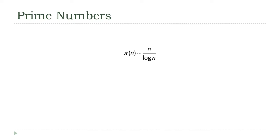We know quite a bit about prime numbers, but we definitely don't know everything. For example, we've got a pretty good idea of how they're distributed, and that's what this statement here is telling us. This π(n) is called the prime counting function, and it equals the number of prime numbers less than or equal to n. What this is saying is that the number of primes less than or equal to n is proportional to n divided by the log of n.